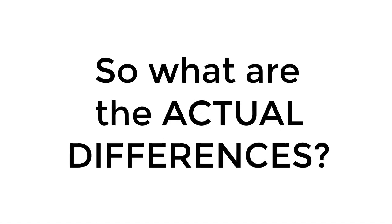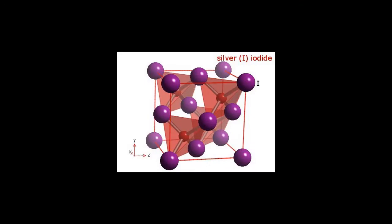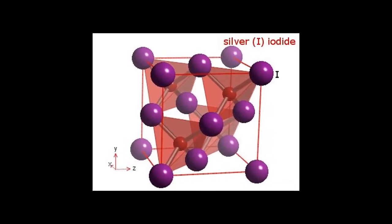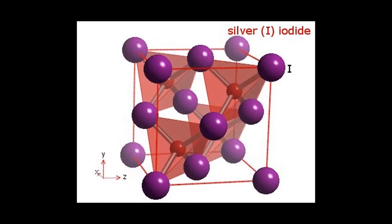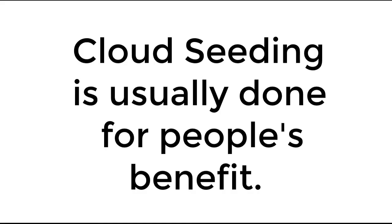So what are the actual differences between the two? Cloud seeding is a technique that forces rain clouds to produce more or less rainfall. It uses existing low-altitude rain clouds and makes them produce rain by adding, in most cases, silver iodide. The silver iodide, because of its crystalline structure, is great at using the available moisture in a rain cloud to create more ice crystals that can potentially turn into rain water. Cloud seeding is usually done for people's benefit.